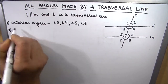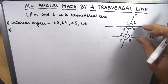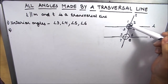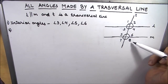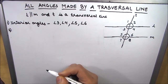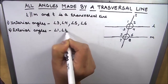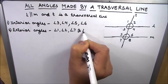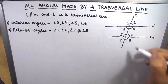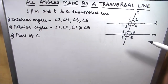The next category is exterior angles. The angles which are outside of these two parallel lines are angle 1, angle 2, angle 7, and angle 8. These are called exterior angles.